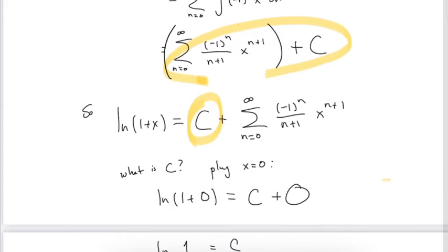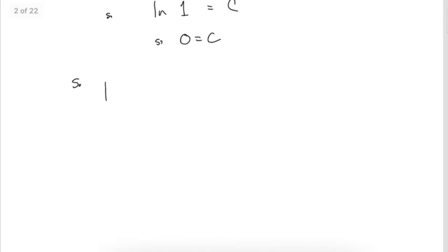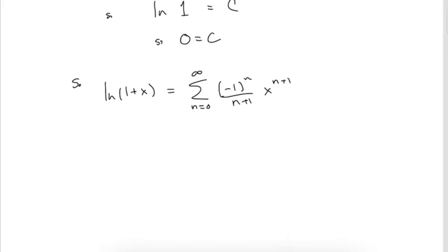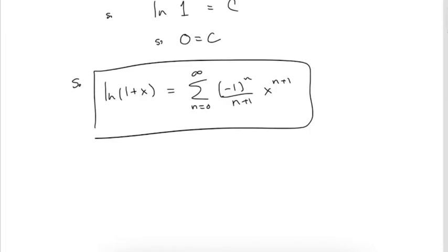So the conclusion is: ln(1+x) = sum from n=0 to infinity of (-1)^n / (n+1) times x^(n+1). This is an important series. As for the radius of convergence, all of these series are based on that first geometric series which has radius of convergence 1, and integrals/derivatives preserve the radius of convergence, so R=1 here as well.